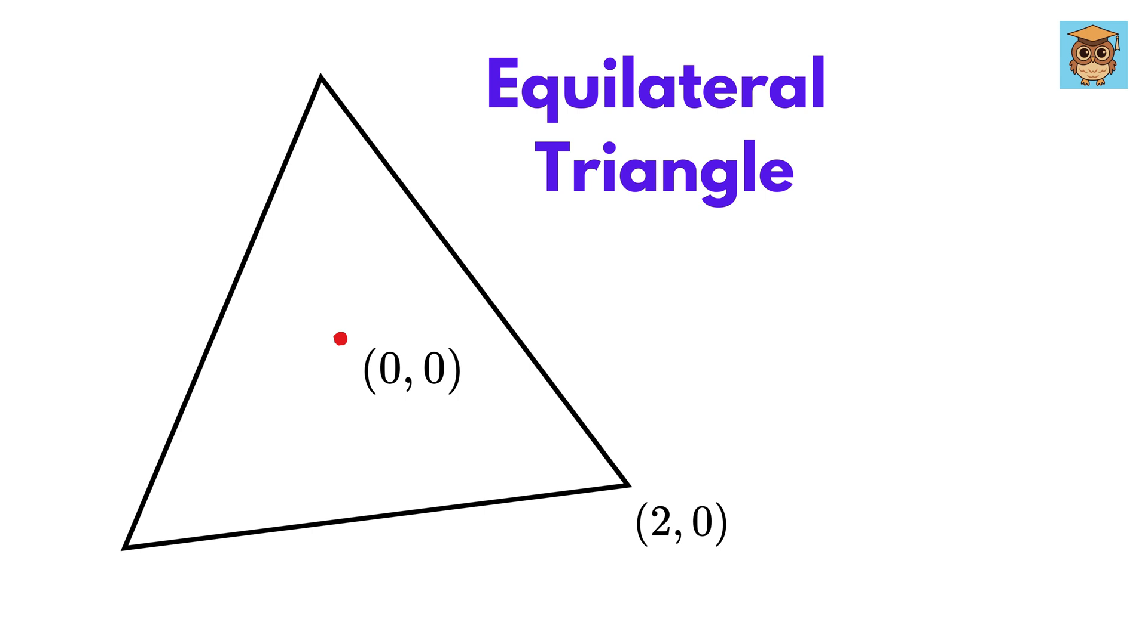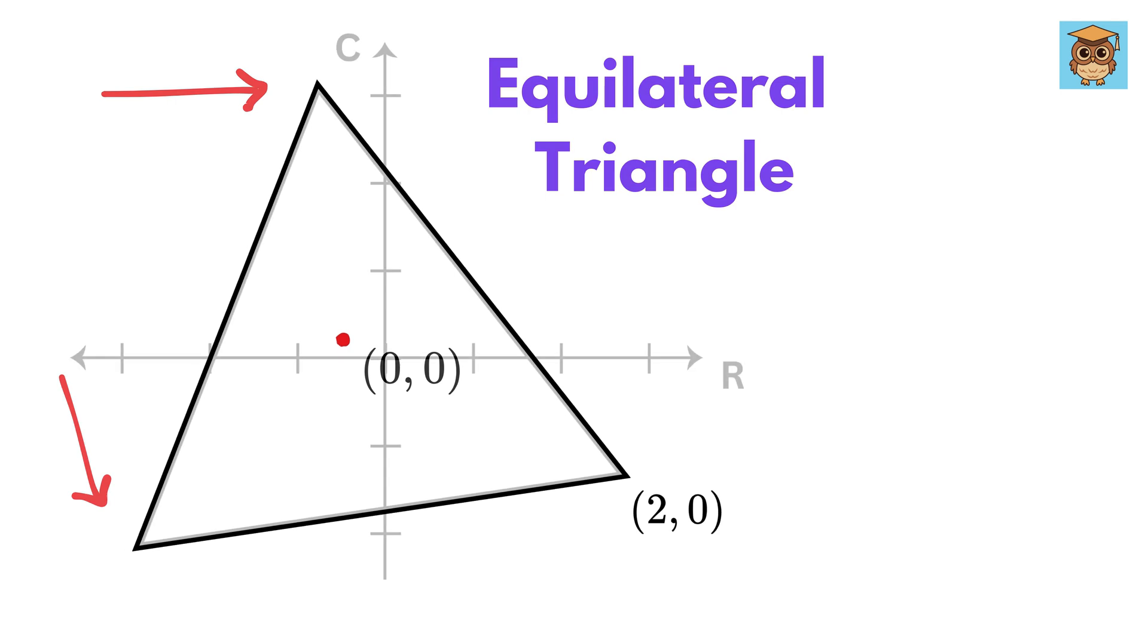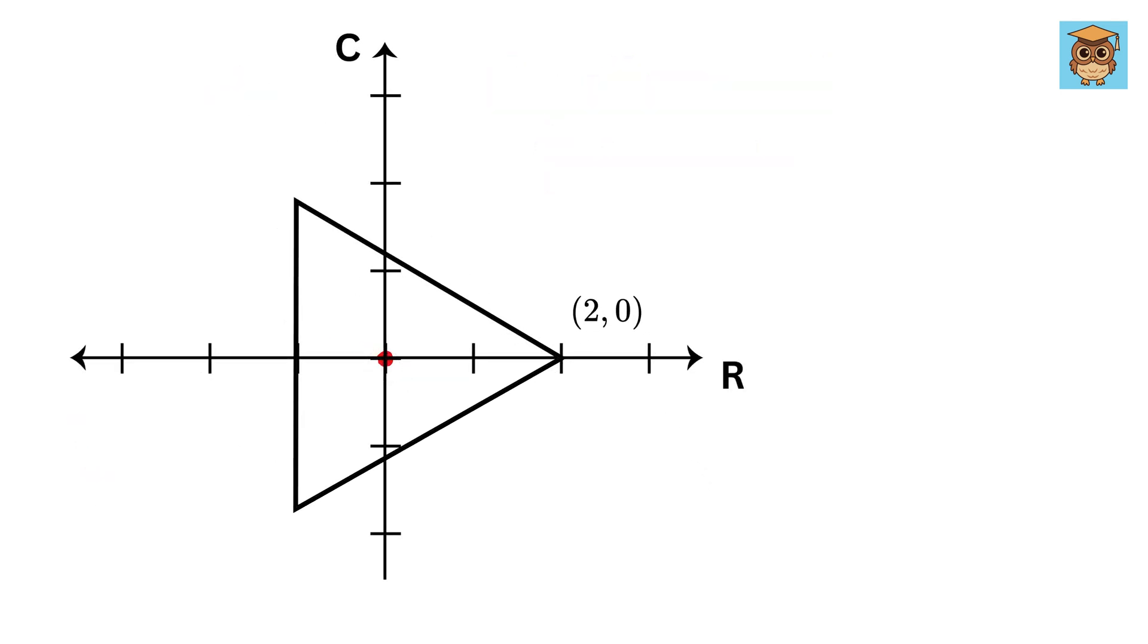Now, consider the question that we asked at the beginning of the video. It's time we apply whatever we have learned and solve it using imaginary numbers. We have this equilateral triangle whose center is at the origin or (0,0), and whose this vertex is at (2,0), and we have to find the other two vertices. Now, put this triangle on this complex numbers graph. Since this is an equilateral triangle, therefore the center of this triangle will be the same as center of the circumcircle of this triangle, and it will be at origin.